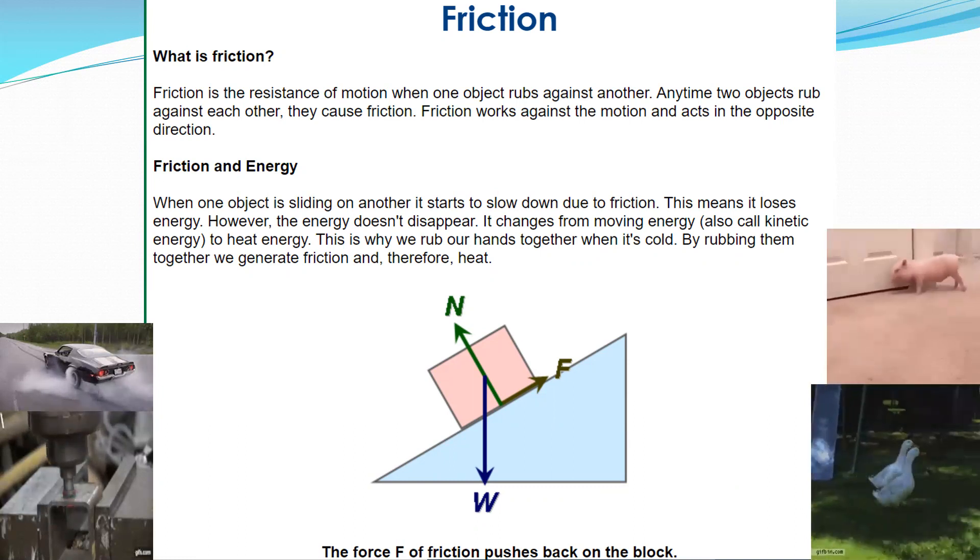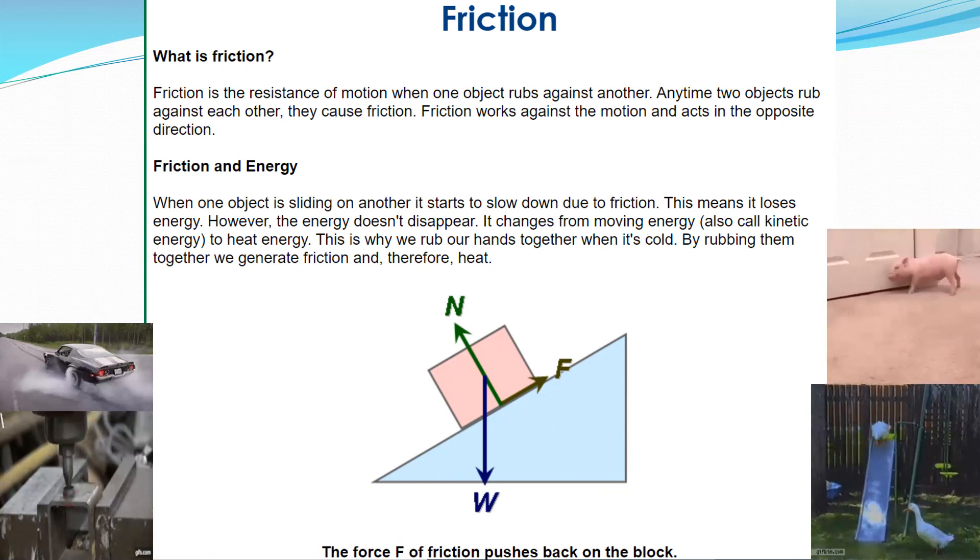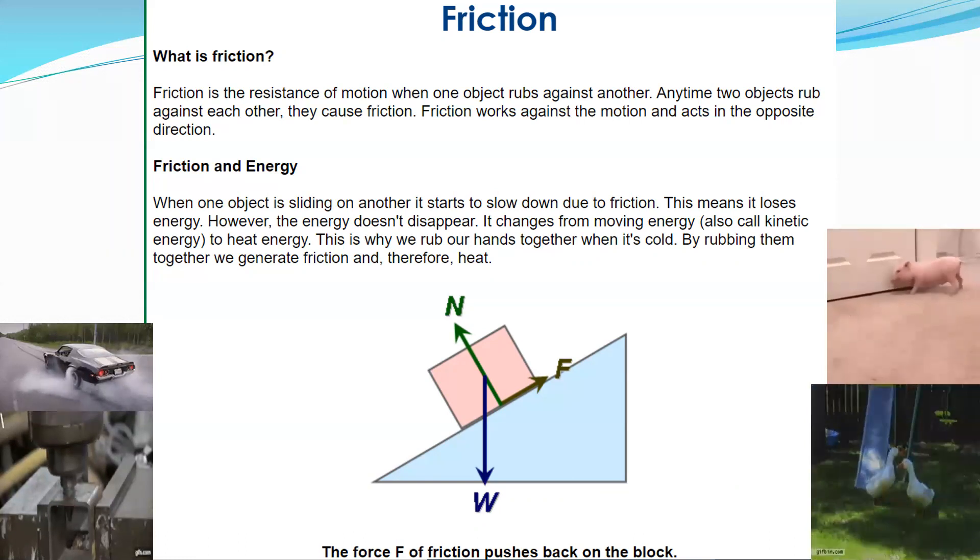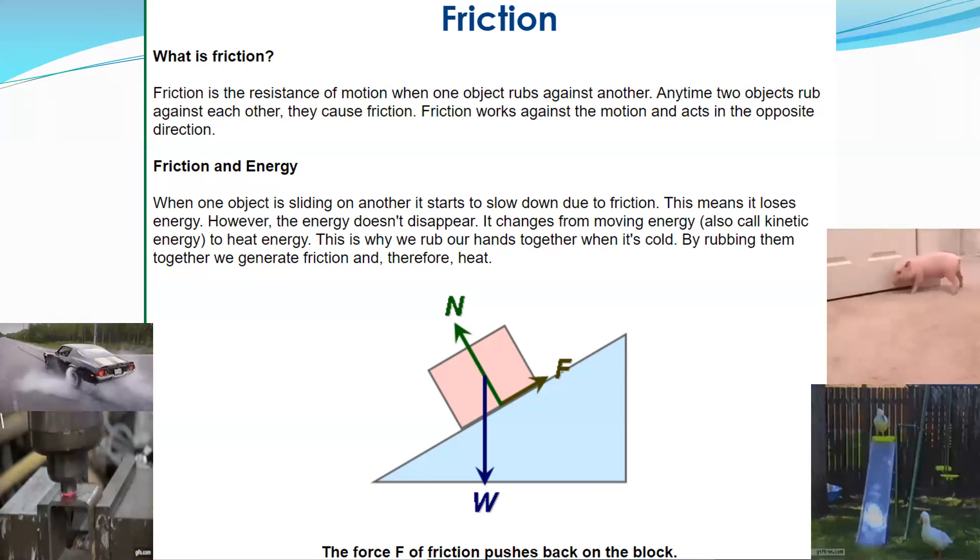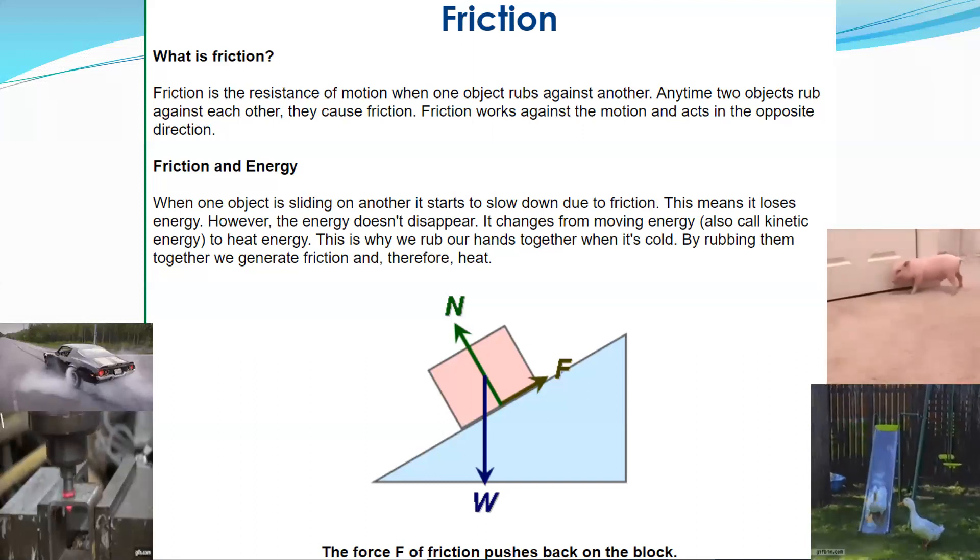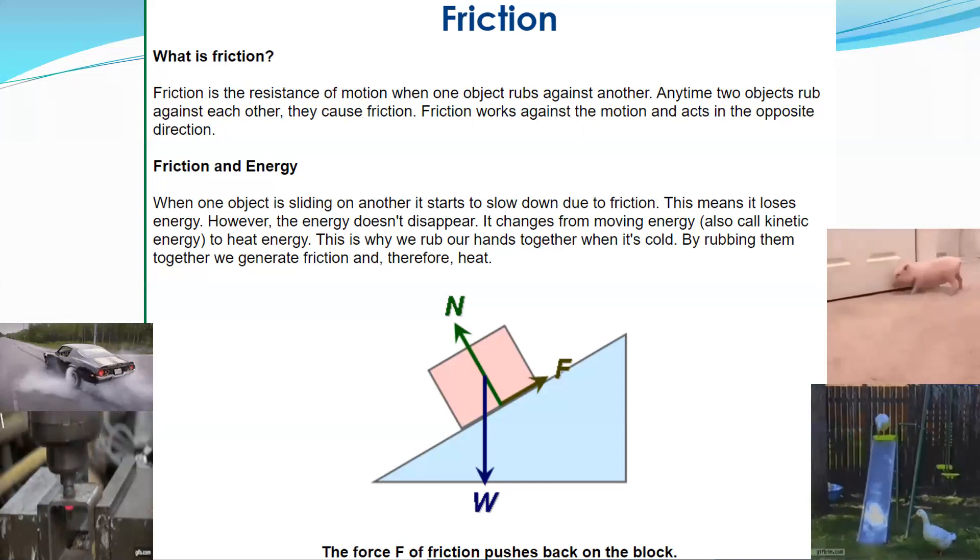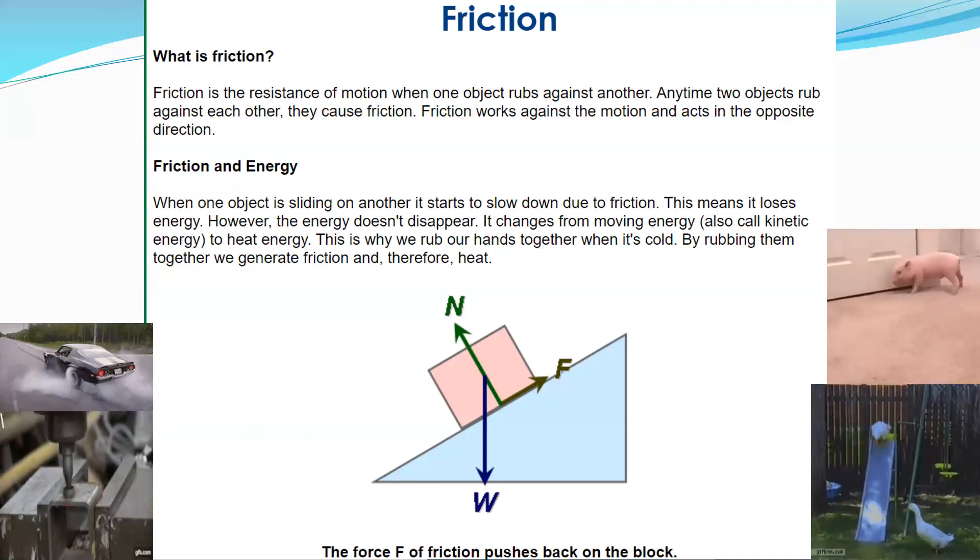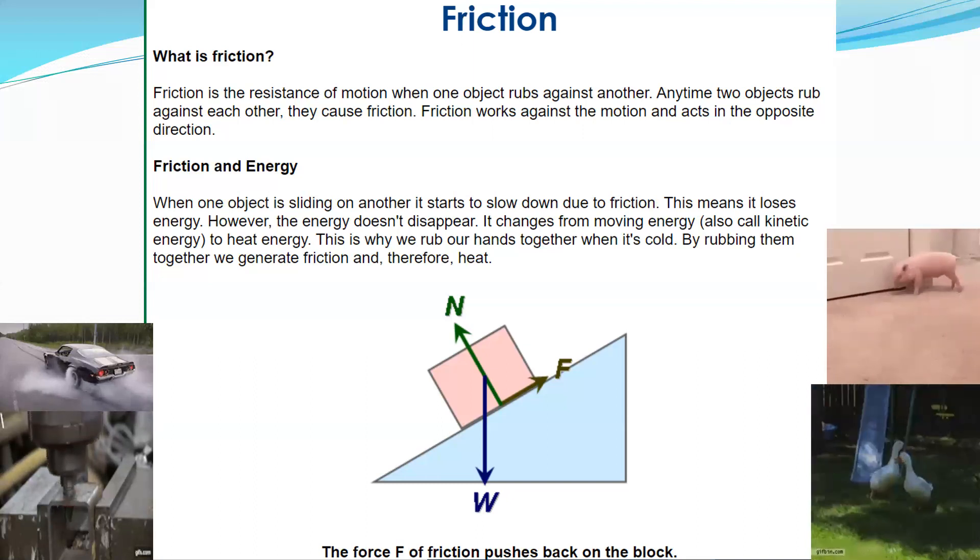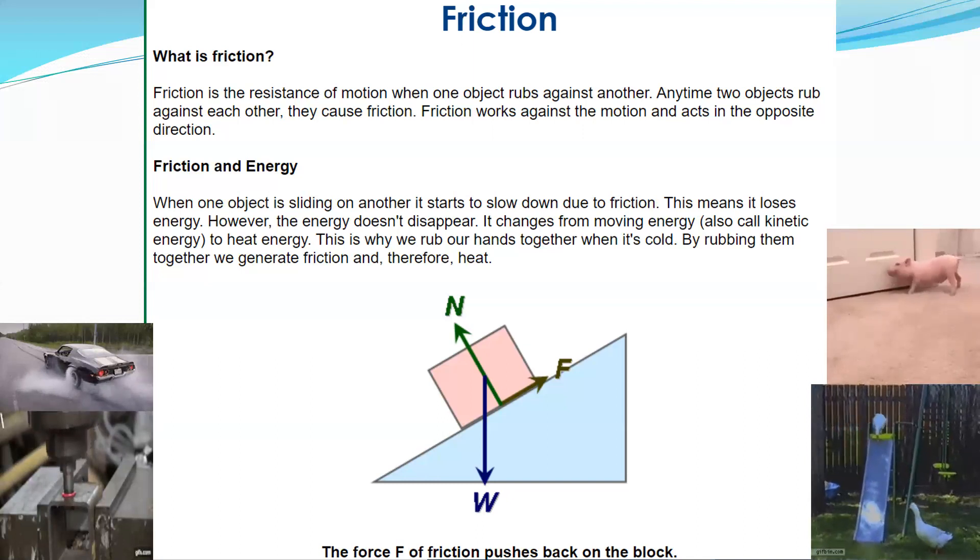Friction and energy. When one object is sliding on another, it starts to slow down due to friction. This means it loses energy. However, the energy doesn't disappear. It changes from moving energy, also known as kinetic, to heat energy. This is why when we rub our hands together when it's cold, we get warm. By rubbing them together, we generate friction and therefore it creates heat.